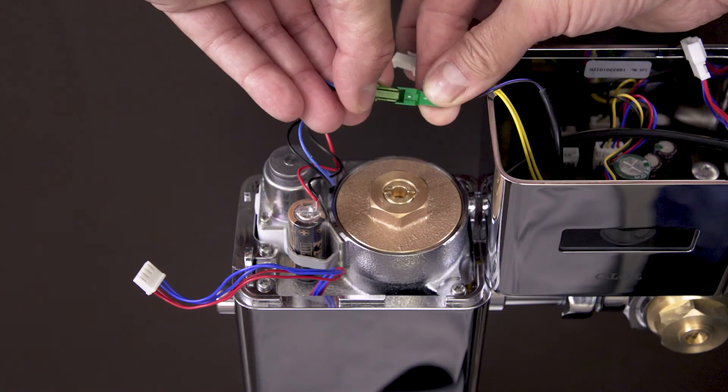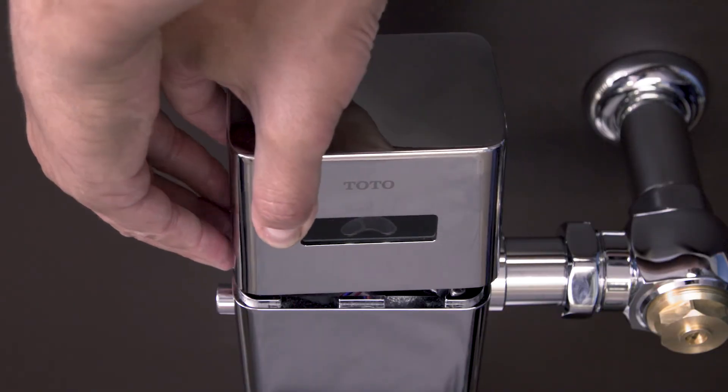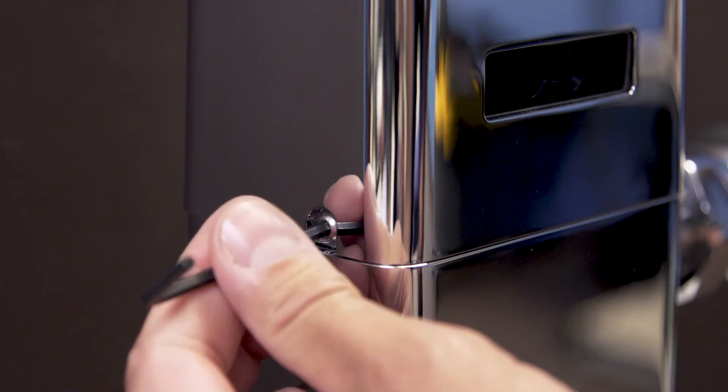Reconnect the wires to the battery, solenoid, and generator. Replace the cover and tighten the set screws.